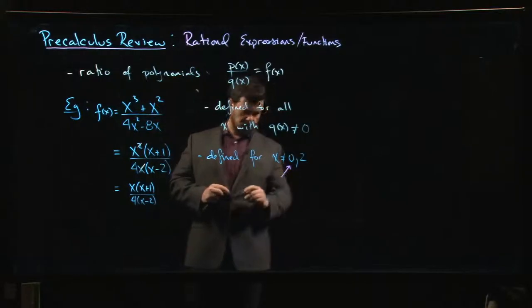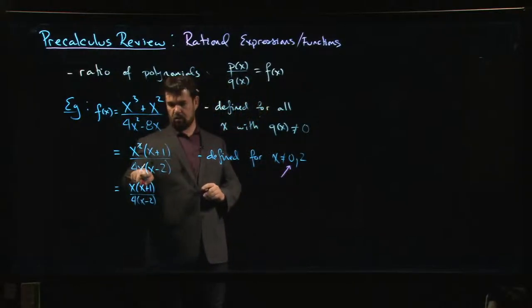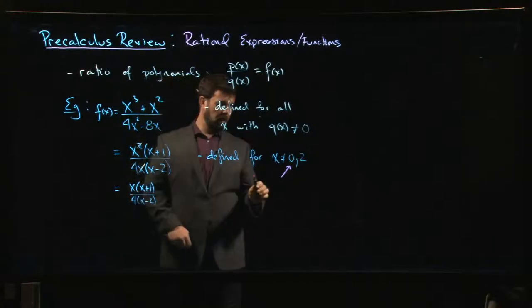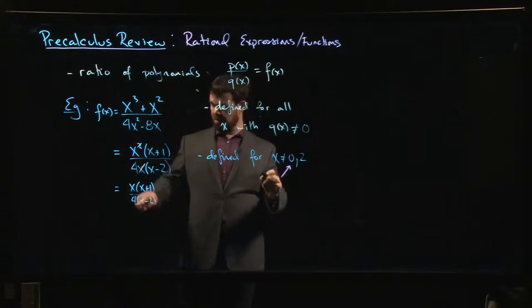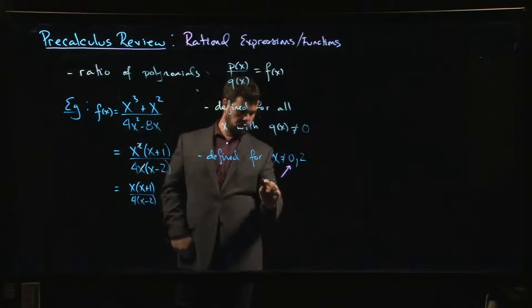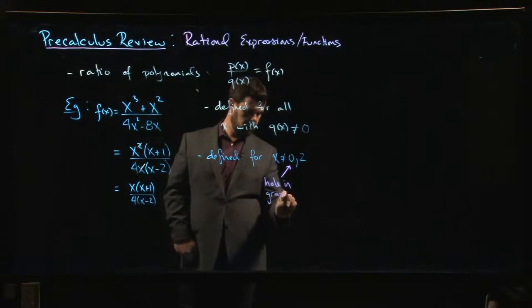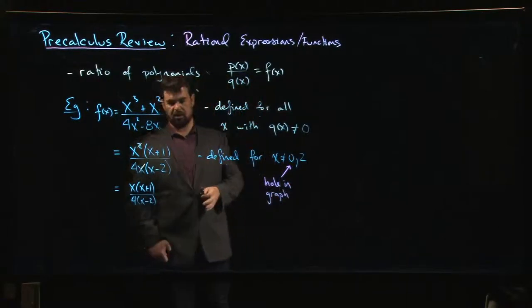This zero here - there was a zero in the denominator, but I canceled it with a zero in the numerator and now it's gone. Once I simplify, there's no longer a zero in the denominator when x equals zero. These sorts of zeros in the denominator that you can cancel produce simply a hole in the graph if you think about the graph of your function.